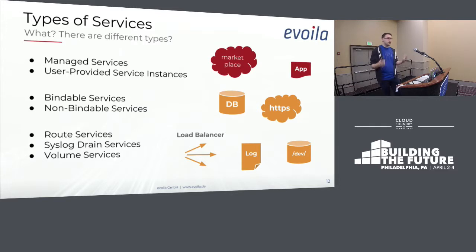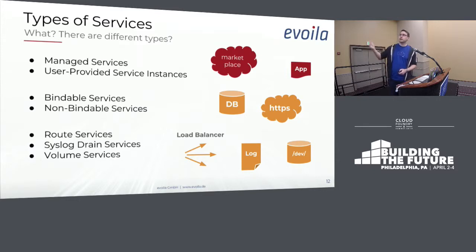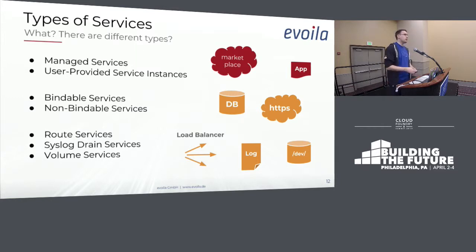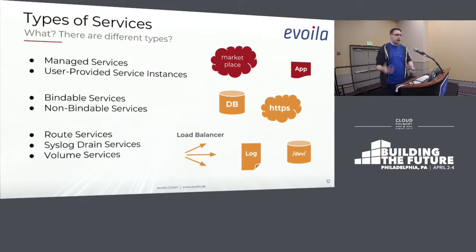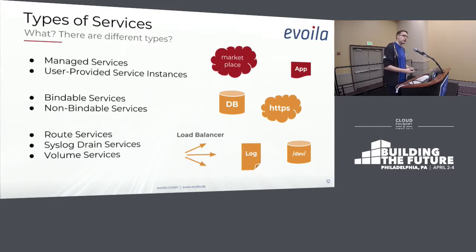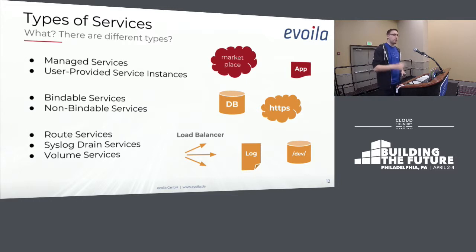What types of services could there be? In the Open Service Broker API concept, we divide between managed services and user-provided service instances. Managed services are what you get from the service broker. User-provided service instances use the CF CLI command 'CF create-user-provided-service' where you put in some JSON. If you have a service instance that's already there and don't want to make a full service broker for it, you can put the credentials - IP address, username, password - in that command as JSON format, then bind that service instance to your app. It gives you the same feeling as a service broker, but you've done the service broker work by hand.